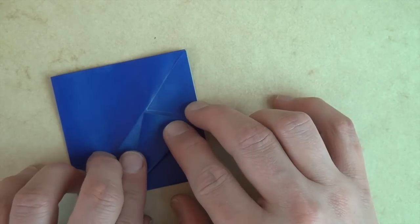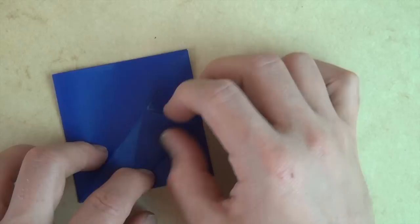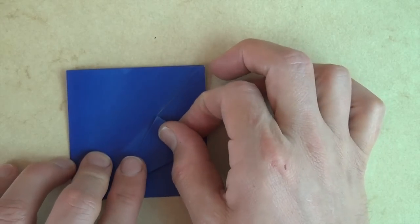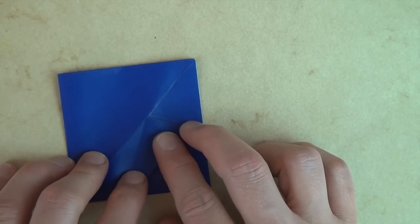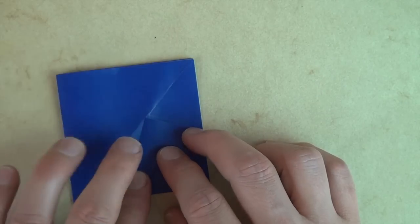So let's fold it like that. And this fold doesn't actually need to be perfect. You could fold it up here or down here. It'll just change the shape of the garbage can.